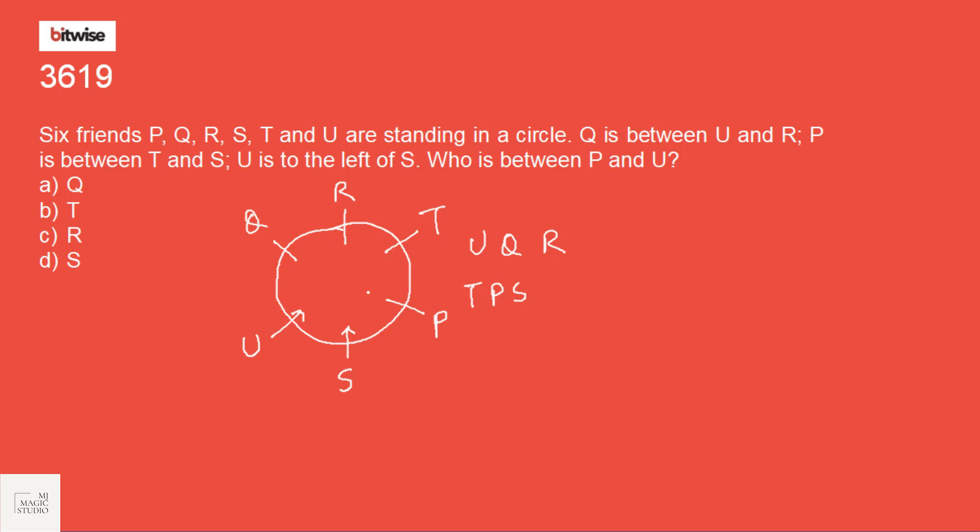Who is between P and U? Between P and U is S. Option D is the pick.